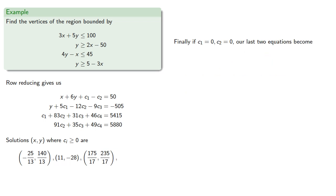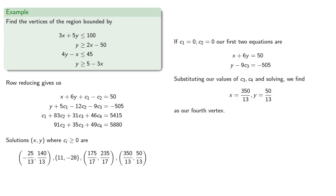Finally, if c1 equals 0 and c2 equals 0, our last two equations become... Which has solutions... So, our solution will satisfy all the inequalities. And so, if c1 and c2 are 0, the first two equations are... And substituting our values for c3 and c4 and solving, we find our fourth vertex.